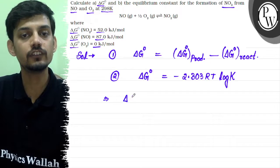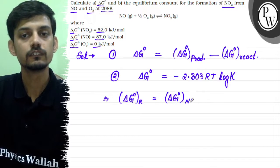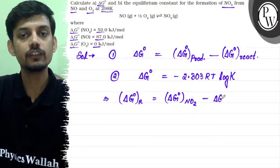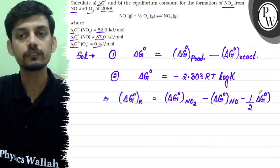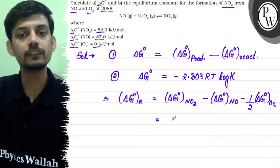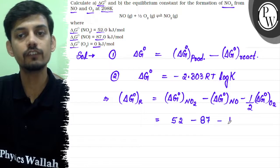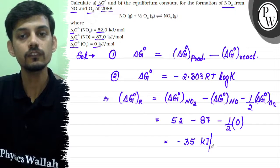For the ΔG° of the reaction: ΔG° = ΔG° of NO₂ − ΔG° of NO − ½ ΔG° of O₂ (products minus reactants). ΔG° of NO₂ is 52, ΔG° of NO is 87, and ΔG° of O₂ is 0. So this comes out to −35 kilojoule per mole.